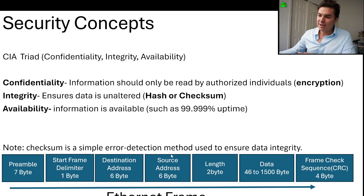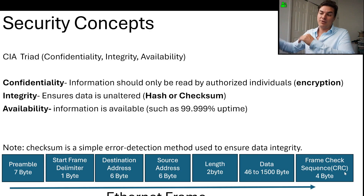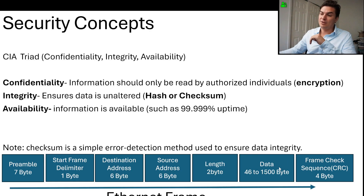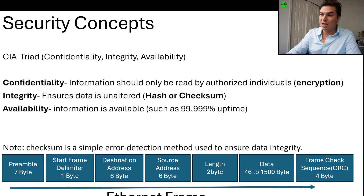It's a simple error detection method used to assure data integrity. At the end of the frame, they have what's called the cyclical redundancy check. It has a number counter that matches up with all the data. If it's the same, it knows that all the information is the same and nothing has changed.